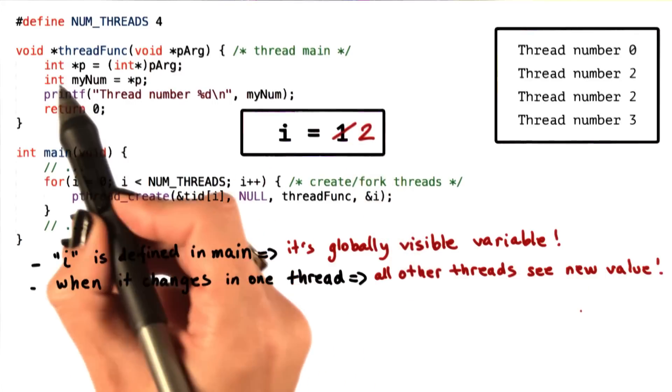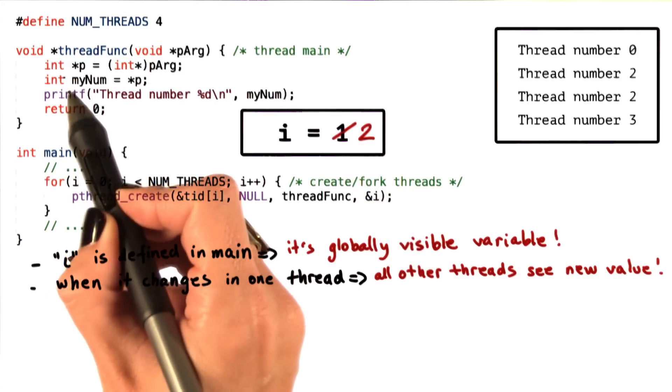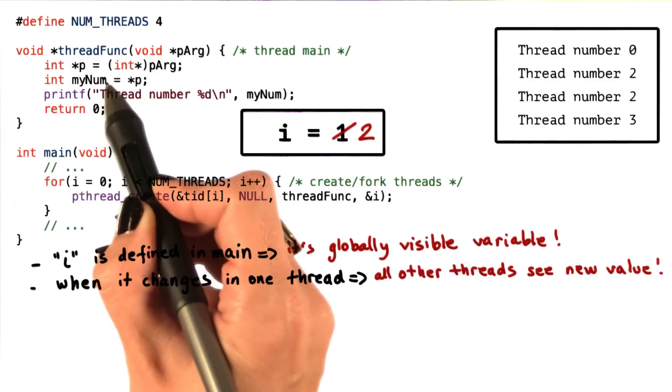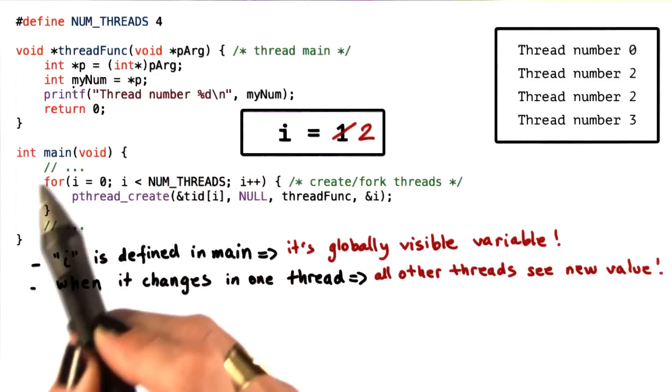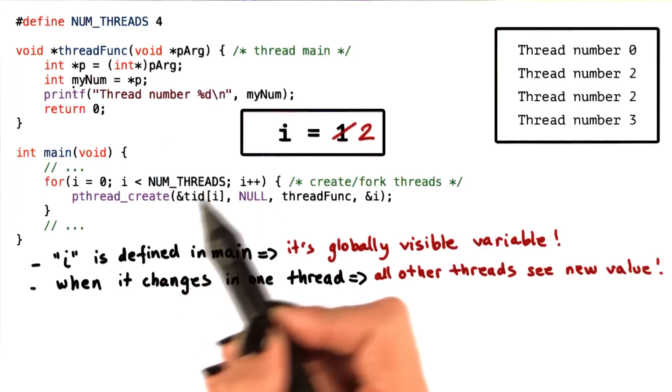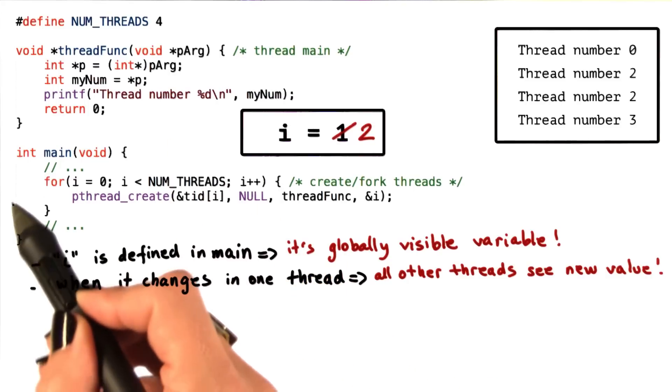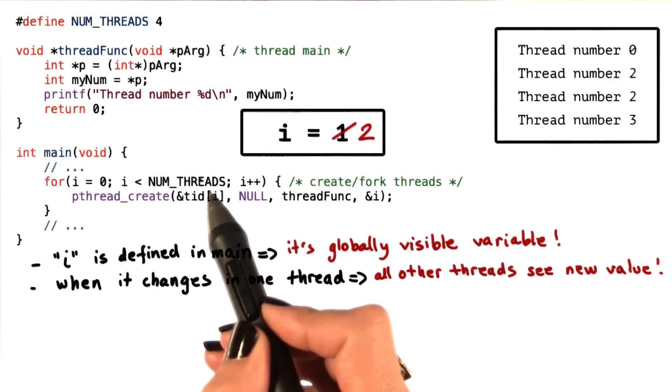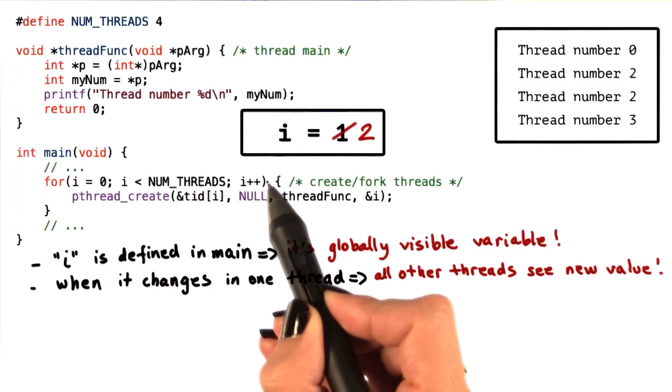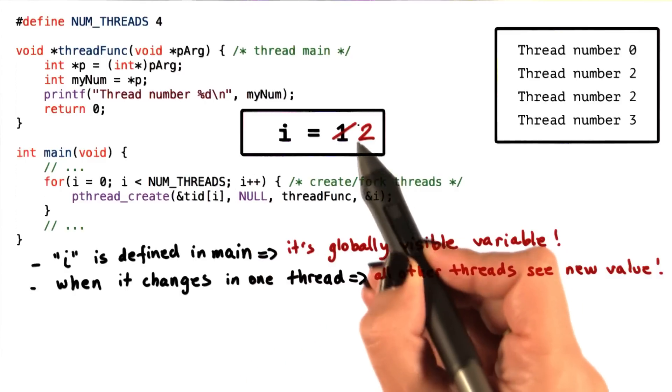However, it is possible that before this thread had a chance to execute these operations and set the value of myNum to be 1, the main thread went into the next iteration of this for loop, and there it incremented i, so i is now 2.